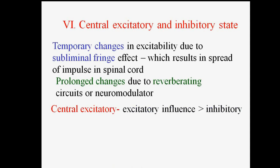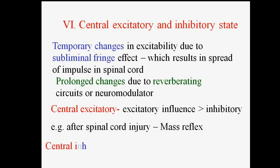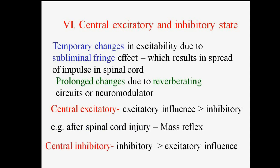The next property is central excitatory and inhibitory state. Temporary changes in excitability are due to the subliminal fringe effect, which results in spread of impulse in the spinal cord. Prolonged changes are due to reverberating circuits or neuromodulators. Central excitatory influence is seen after spinal cord injury as a mass reflex. Central inhibitory state is when inhibitory influence is greater than excitatory influence.